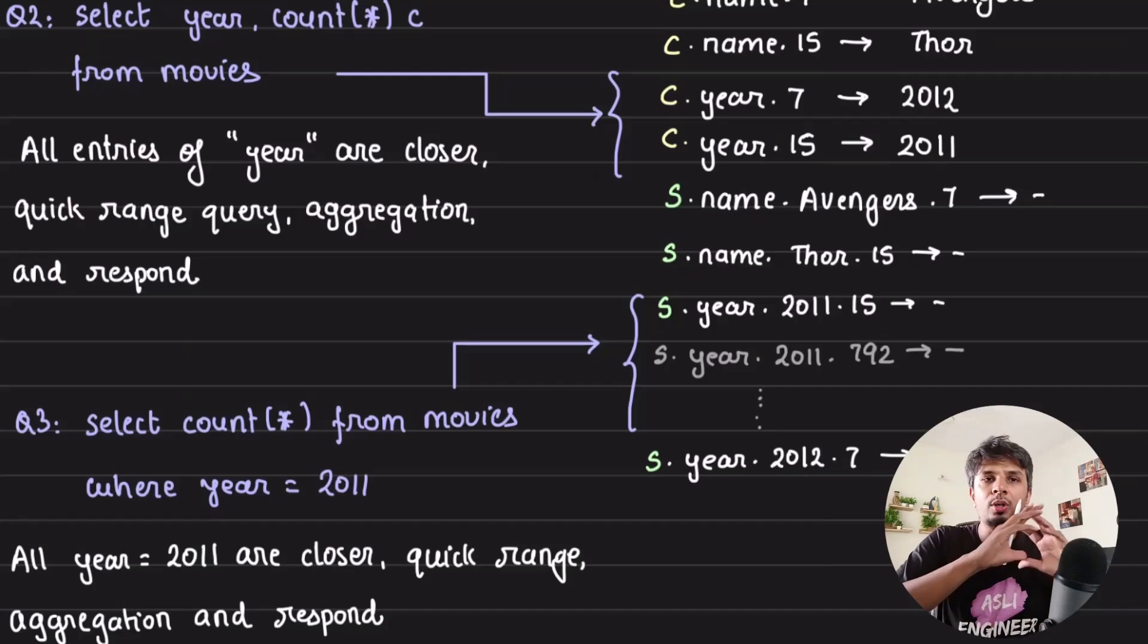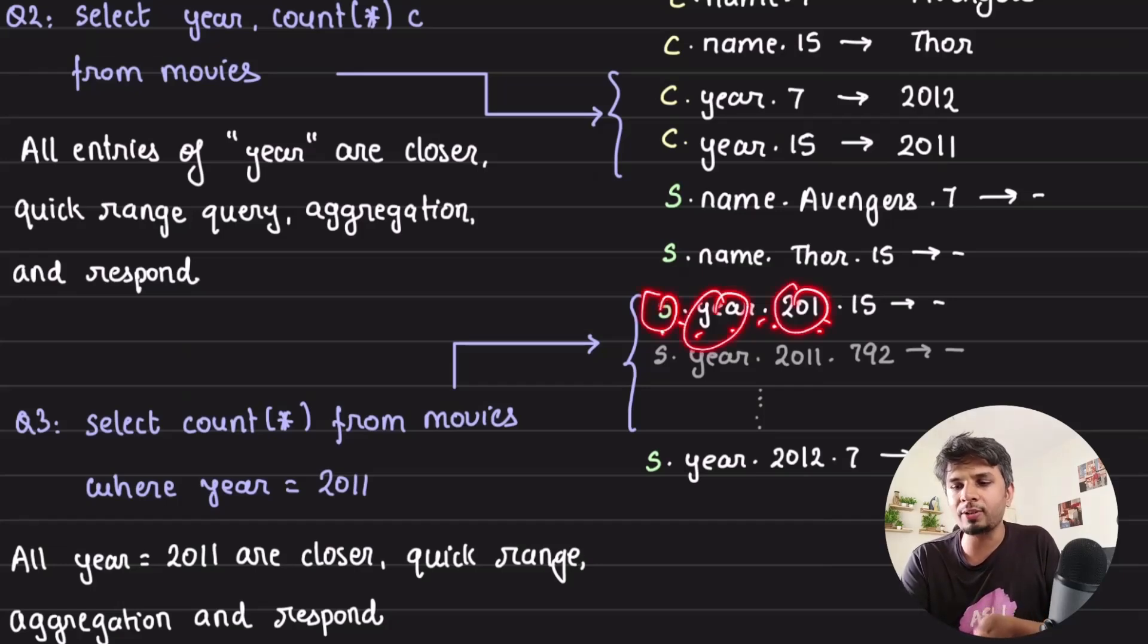Then for the third one, let's say I want to select count star from movies where year is equal to 2011. So I want to have the count of all the movies that happened in year 2011. This is very efficient for inverted index base, because for that year, for that value, I would want to count the total number of documents that are there. So I'd use my search index S.year.2011, because I'm storing S.attribute.value.documentId.